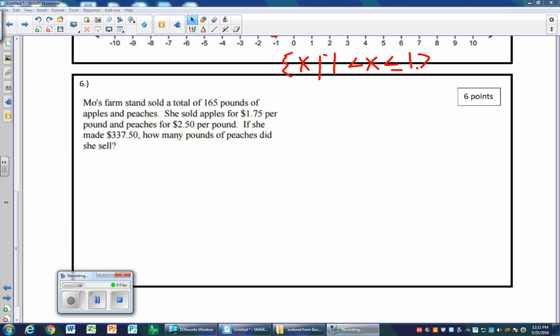Here's the last question. As soon as you're done reading the question, you should realize, other than the fact it's a six-point question that needs a lot of work, this is a simultaneous equation problem. Mo's farm stand sold a total of 165 pounds of apples and peaches. I have two variables: apples and peaches. She sold apples for $1.75 per pound and peaches for $2.50 per pound. If she made $337.50, how many pounds of peaches did she sell? So the first equation: if I add up the number of pounds of apples and the number of pounds of peaches, it had better equal 165 pounds.